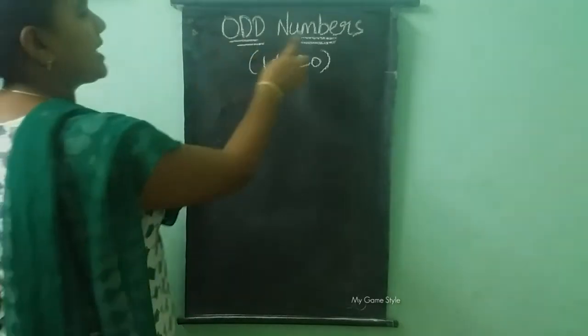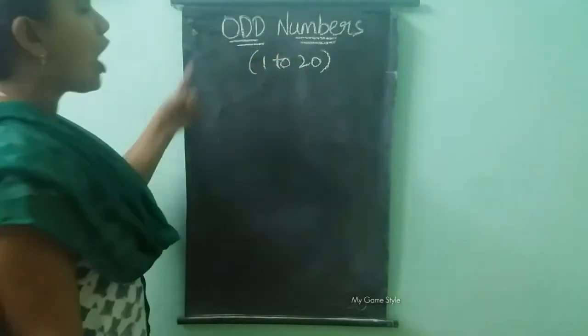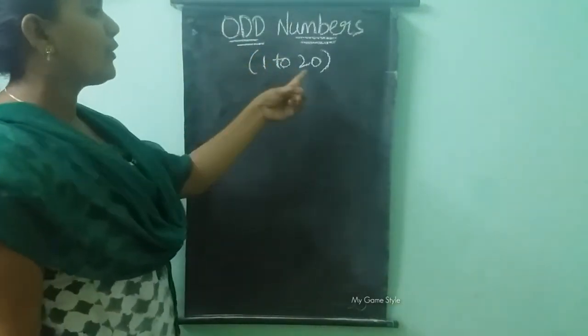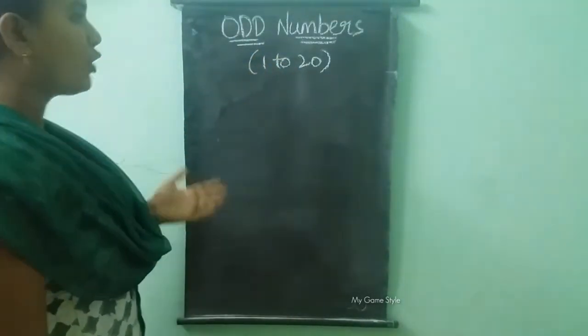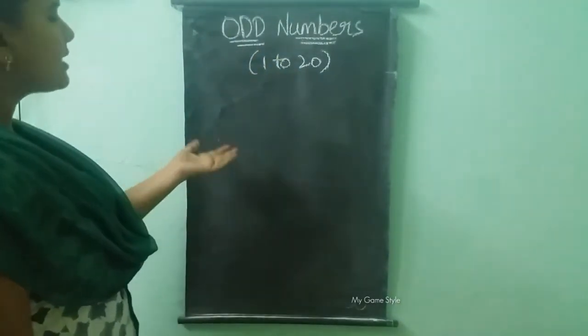Odd numbers. We are writing odd numbers from 1 to 20. What are those odd numbers?